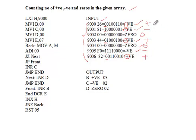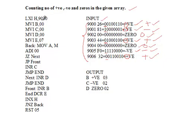So in this array from 9000 to 9006, we have taken seven inputs. Among them, we have three positive numbers, two negative numbers, and two zeros. This is what we call counting the number of positives, negatives, and zeros in an array — we identify each element and count them.